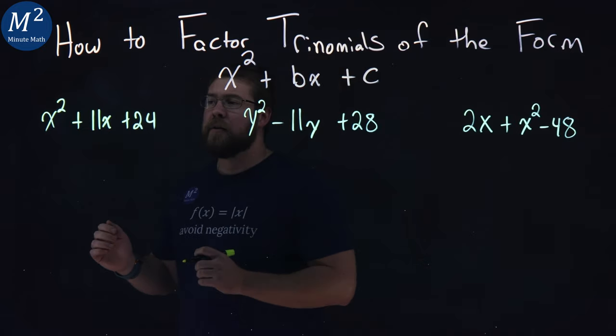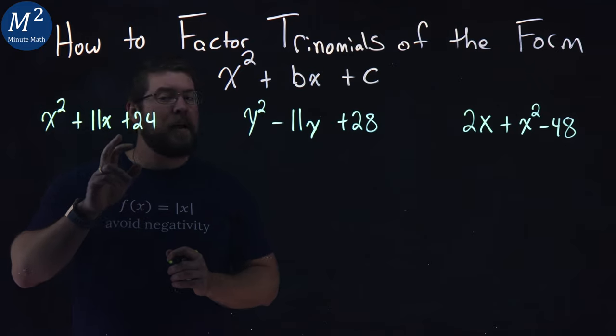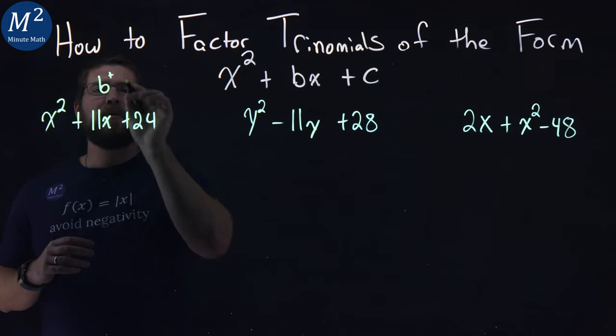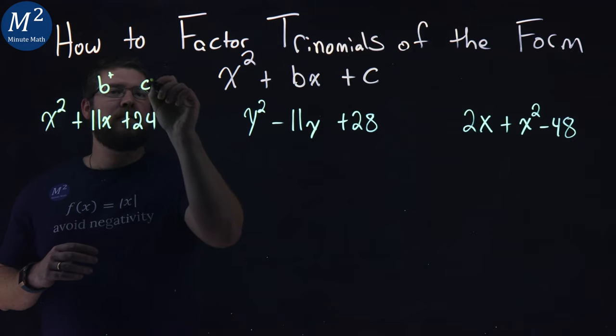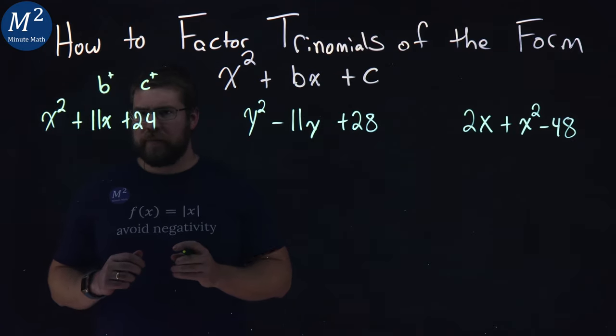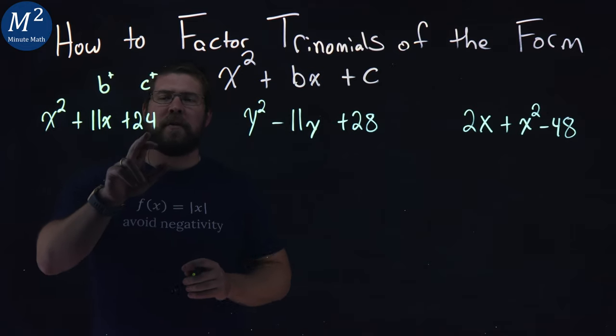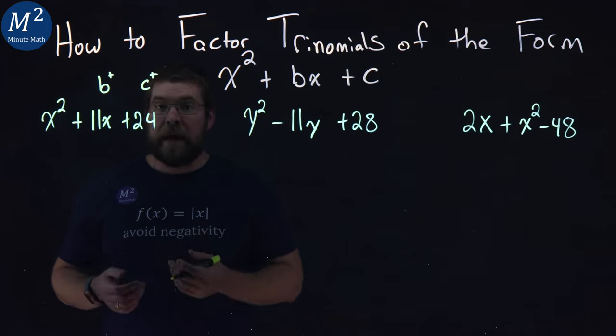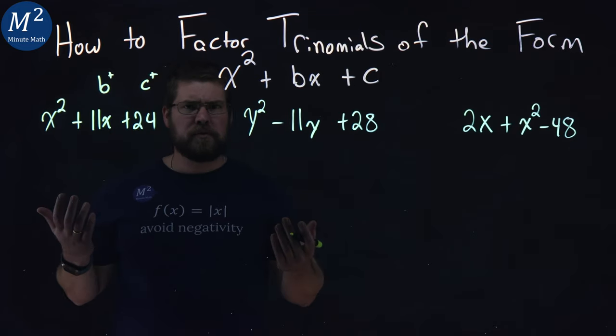Let's start with our first one here, x squared plus 11x plus 24. Notice here our b value is a positive number and our c value is also a positive number. Now, I first want to determine the factors of 24. What two numbers multiply to be our c value, 24.